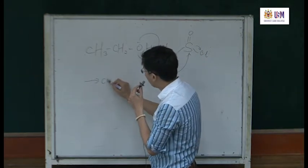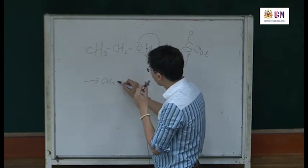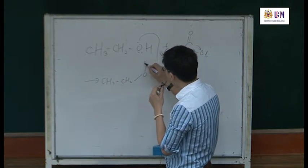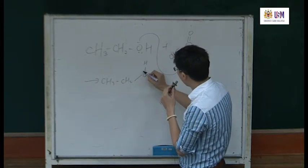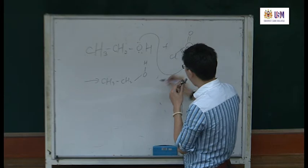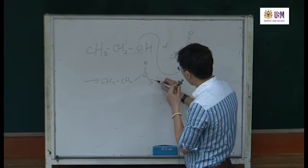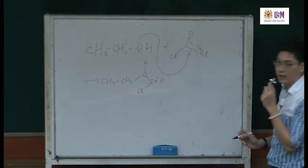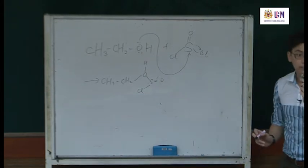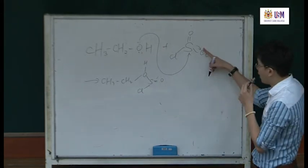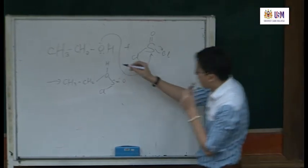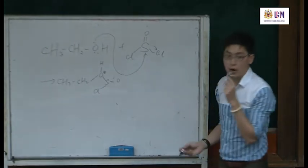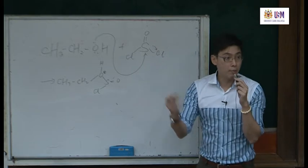What you get is CH₃CH₂ — in this case you have O, you have an H here, and you have an S double bond O and Cl. So you have a positive charge here, because now your oxygen atom has formed a triple bond with S. One Cl has already dropped off.